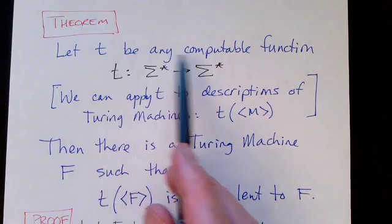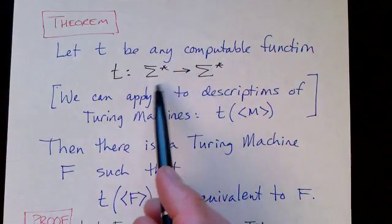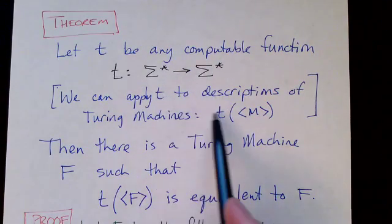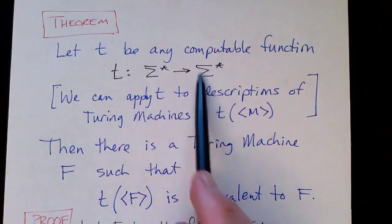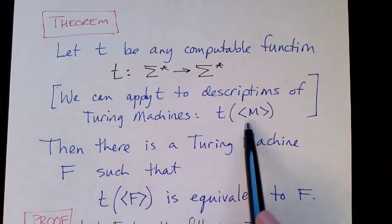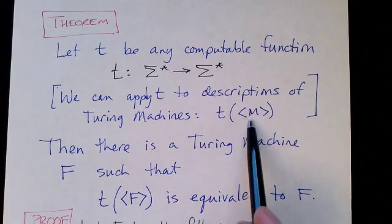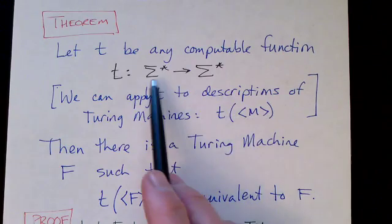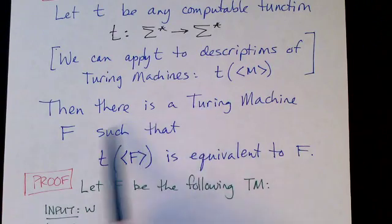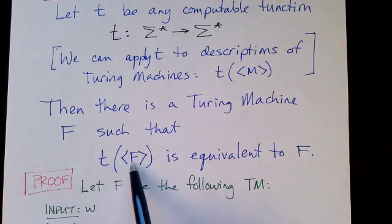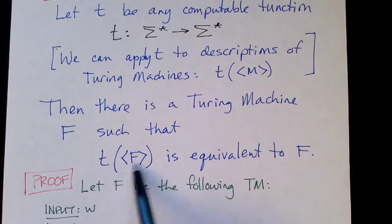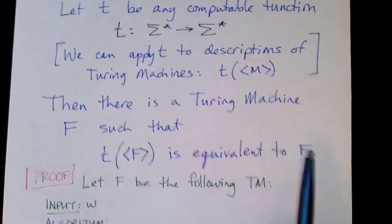Let t be any computable function. We can apply t to descriptions of Turing machines. It takes one string and maps it into another string. We can apply this function to a description of a Turing machine and it turns it into something else. Then there's a Turing machine F such that when t is applied to F, you'll get a Turing machine that's equivalent.